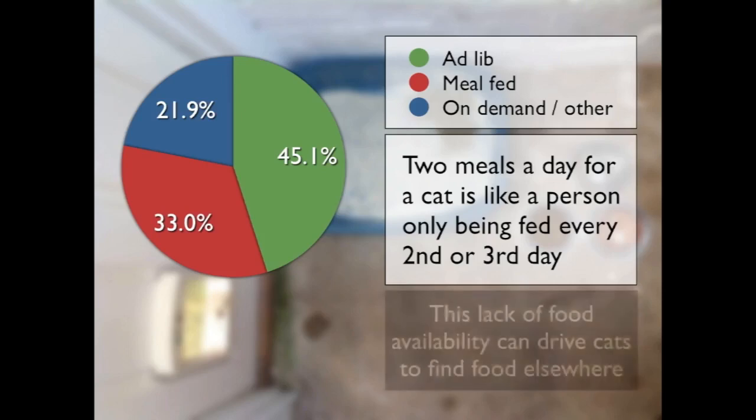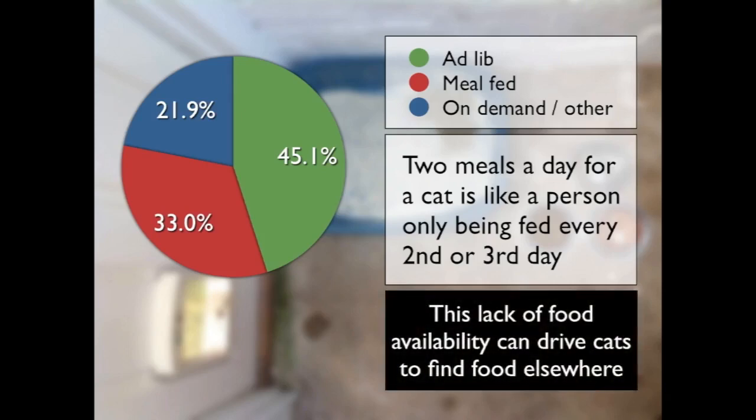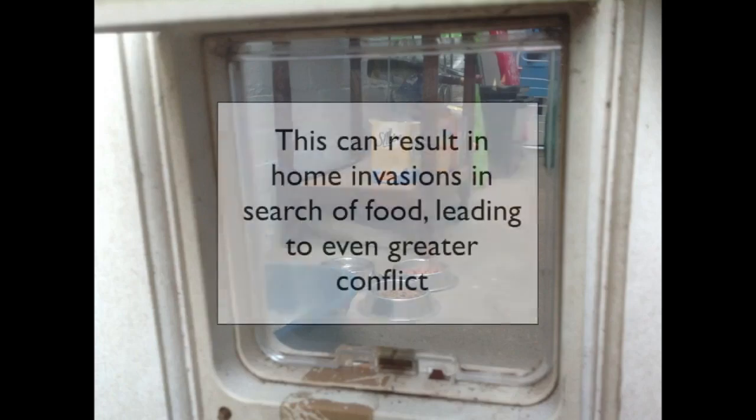This lack of food can drive cats to find food elsewhere. It may be possible for them to scavenge in the local area or even hunt, but in many cases the easiest source of food is to look in the homes of vulnerable neighbouring cats. If there is no lockable cat flap, food visible in another cat's household is an open invitation for a home invasion, which is likely to lead to even greater conflict.